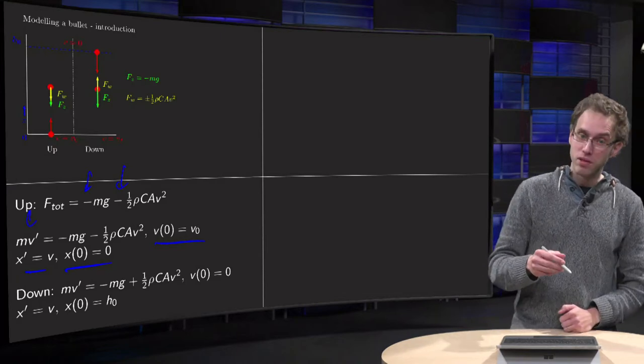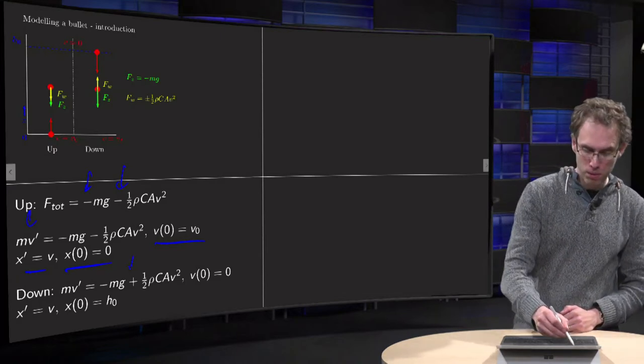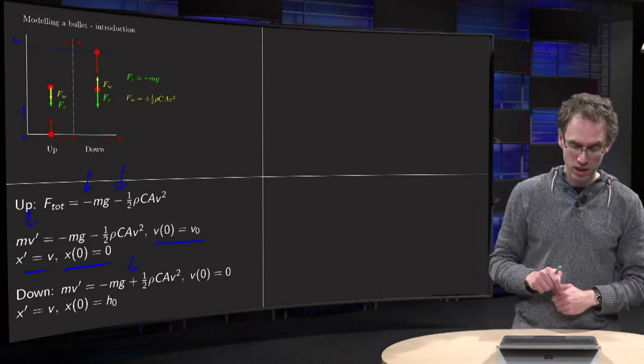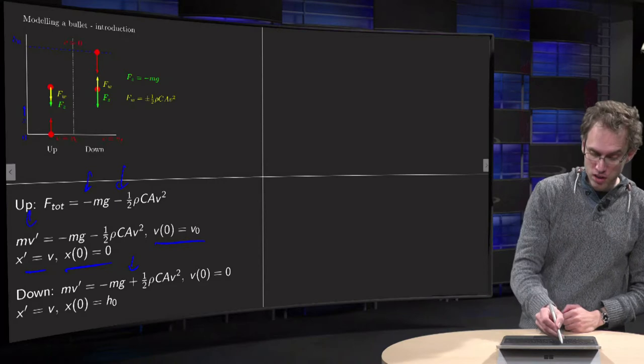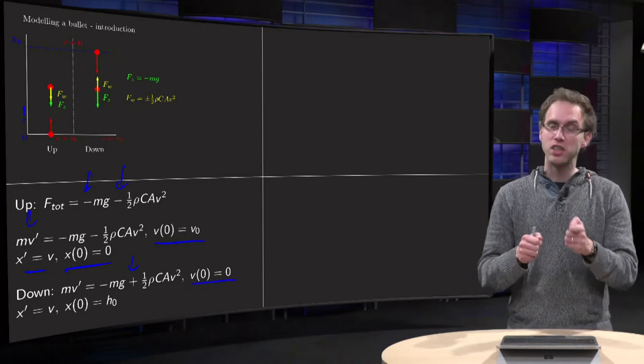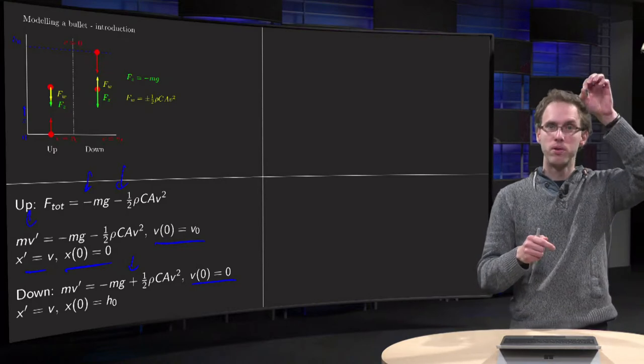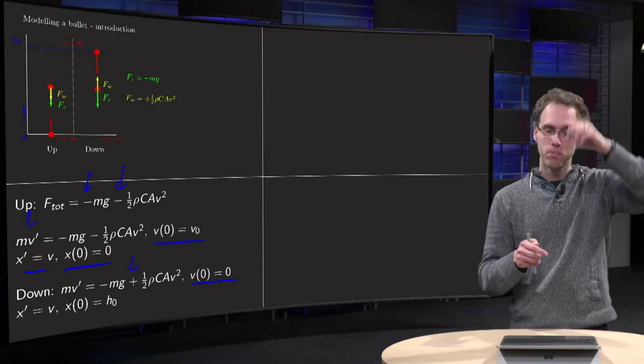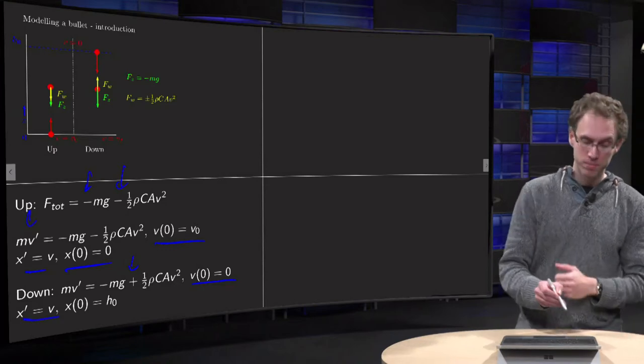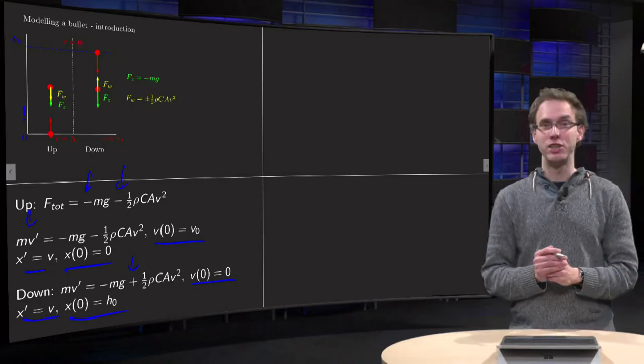Now if we go down, we have the same differential equation, but now with a plus sign over here. Going down, frictional force works in the plus direction. We start with V zero equals zero. We will just reset our time. If we are up, we start again at t equals zero. So we take V zero to be zero. X prime equals V, but now at height h zero.